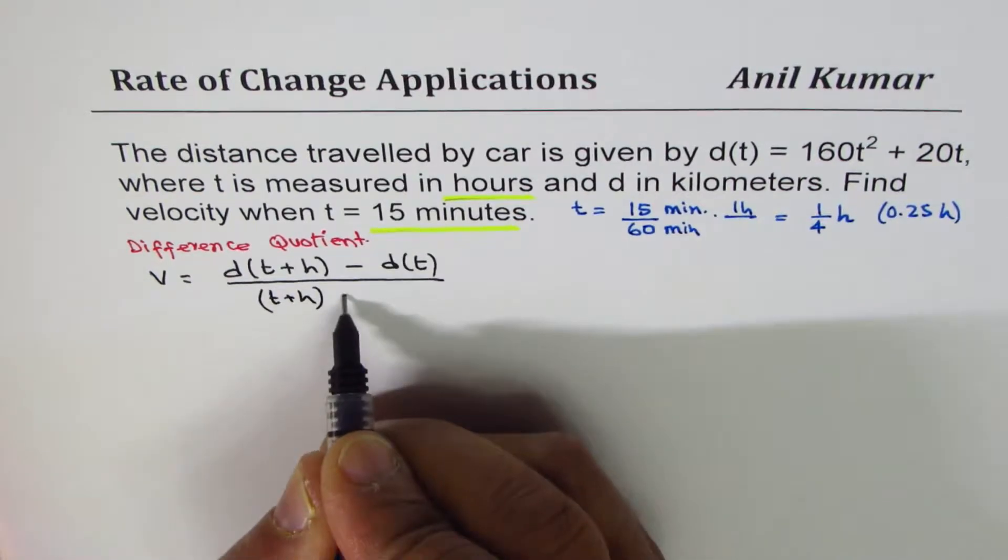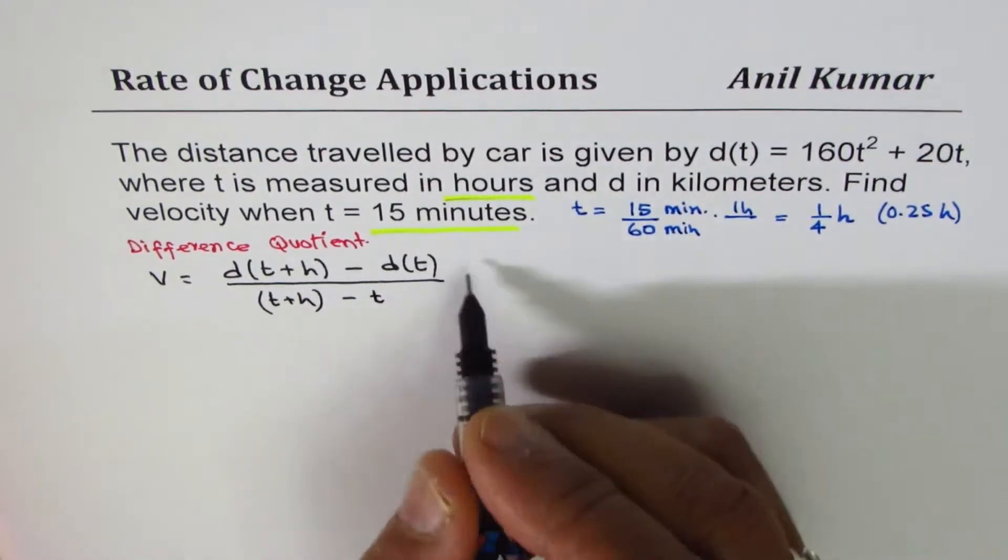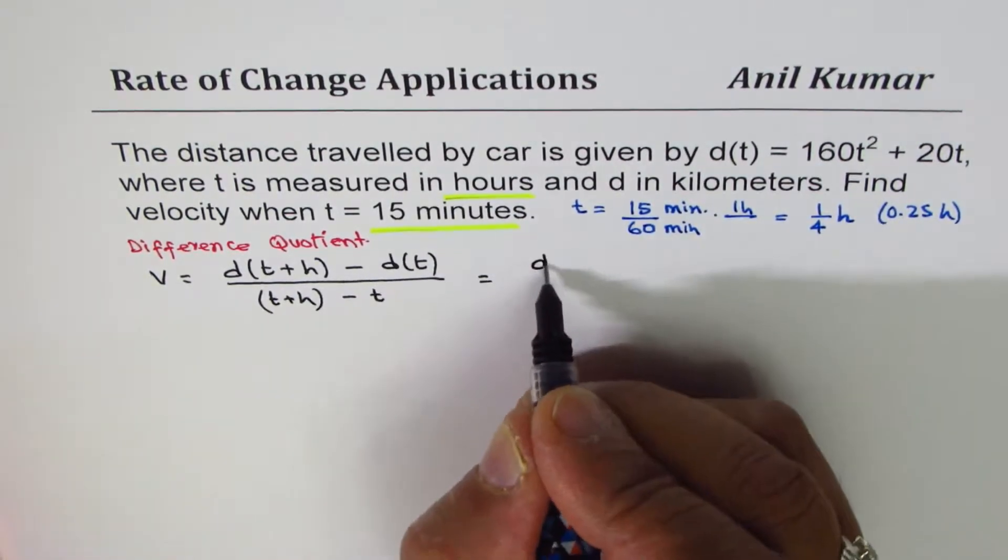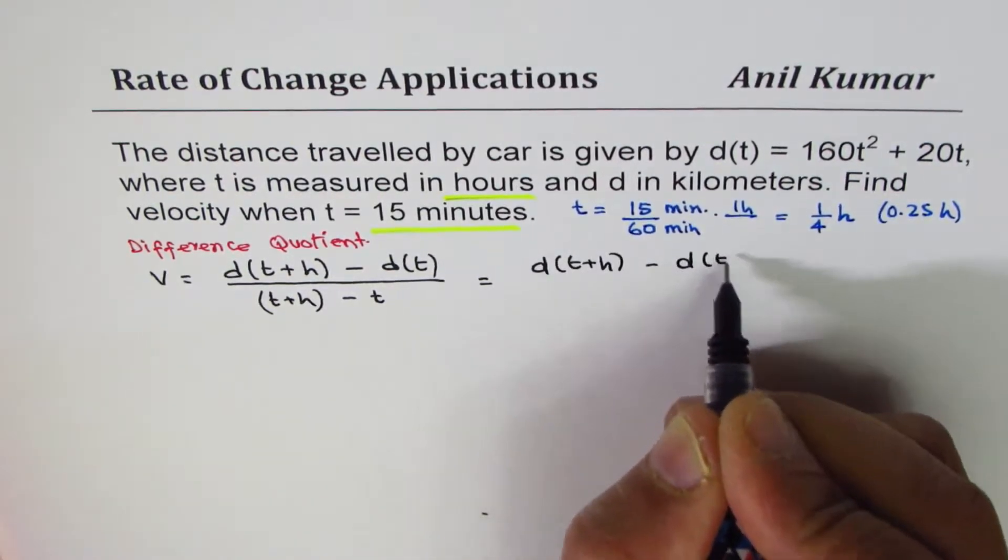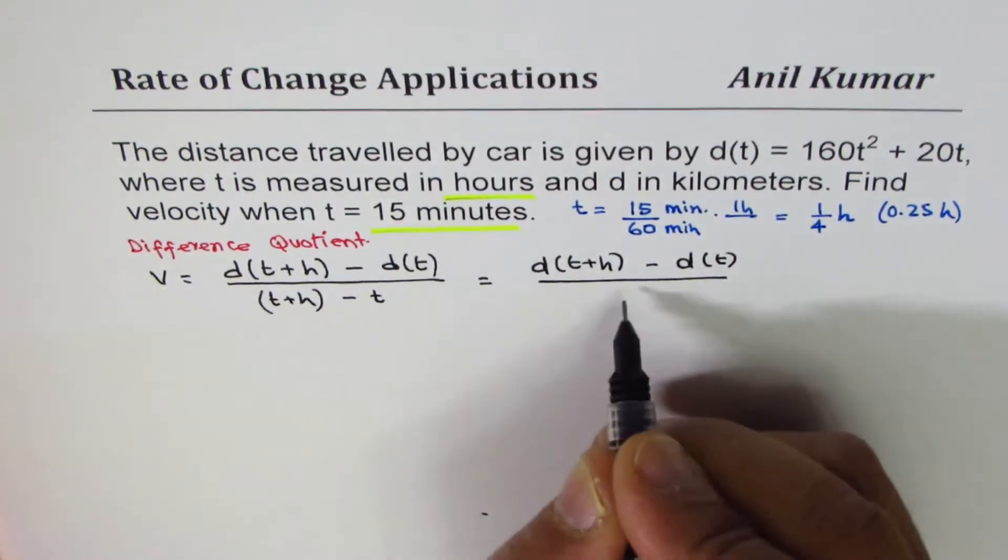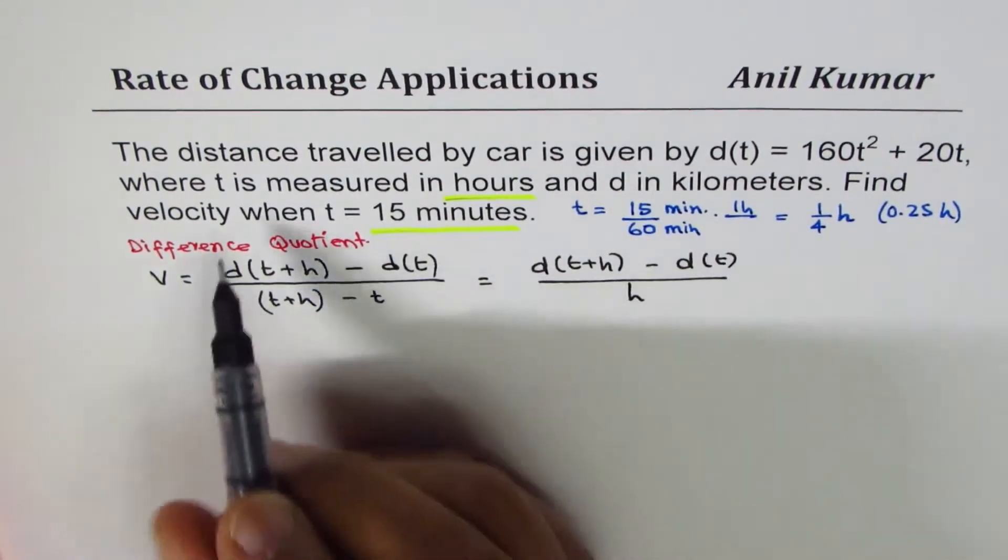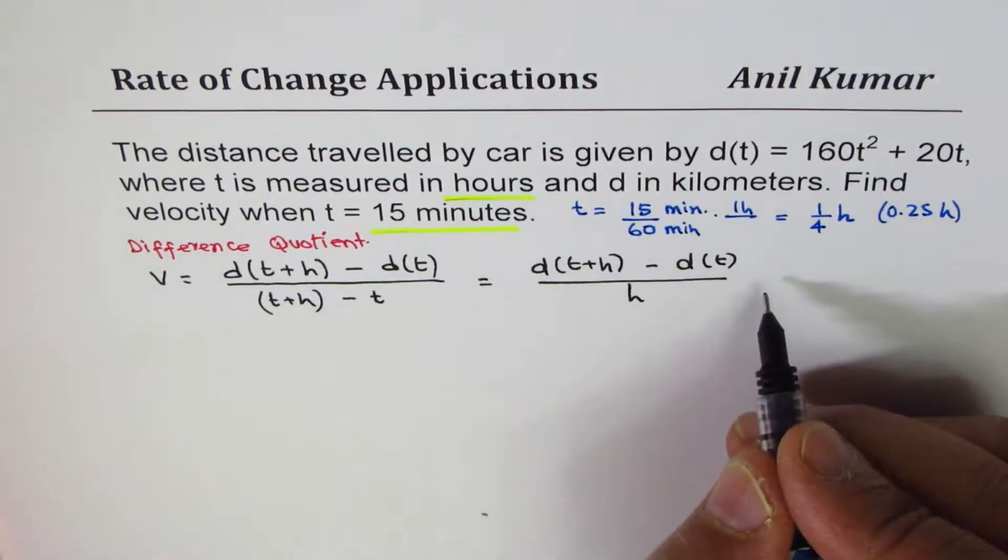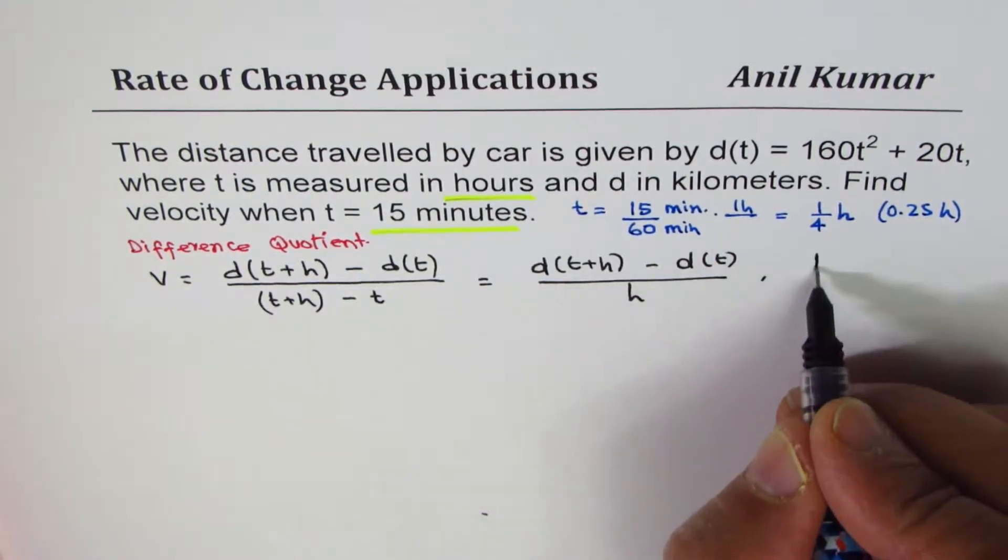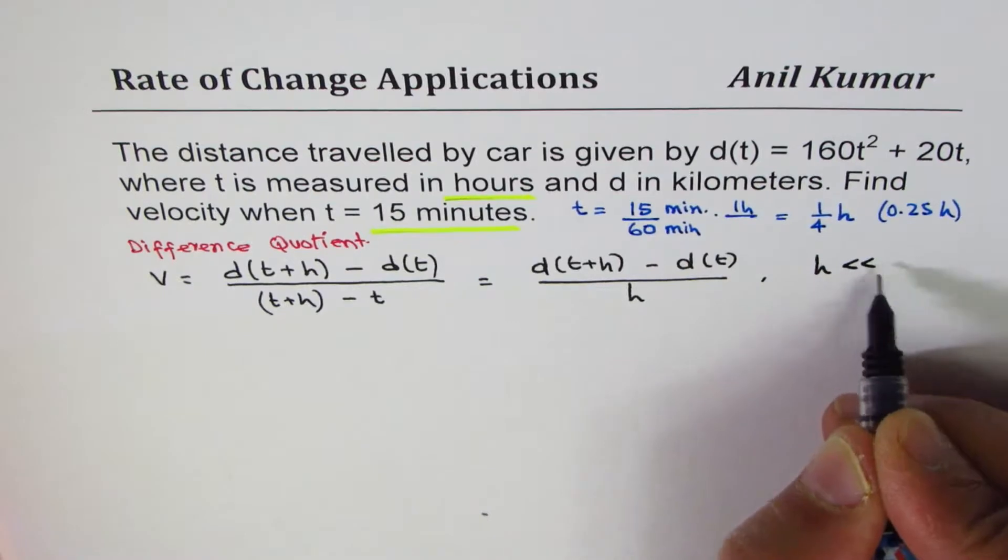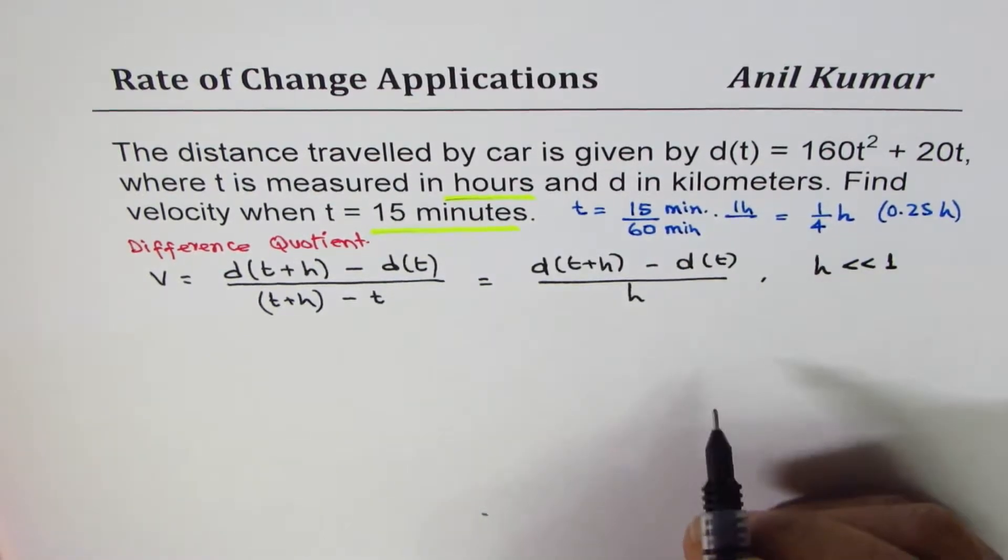Which you could write as d(t+h) minus d(t) divided by h. Where we really want to find instantaneous rate of change then the two points which we are considering they are very close and we say h is very very less as compared to 1, so they are very close.